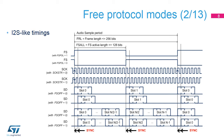In an I2S-like protocol, each edge of the frame synchronization, or FS, is used to align the slot positions. The frame length, the duty cycle, and polarity can be adjusted. The clock data strobe edge can be selected as well. The position of the slots with respect to the frame edges can be selected. The size of the slots can also be adjusted. There must be an even number of slots per frame in I2S-like protocols.